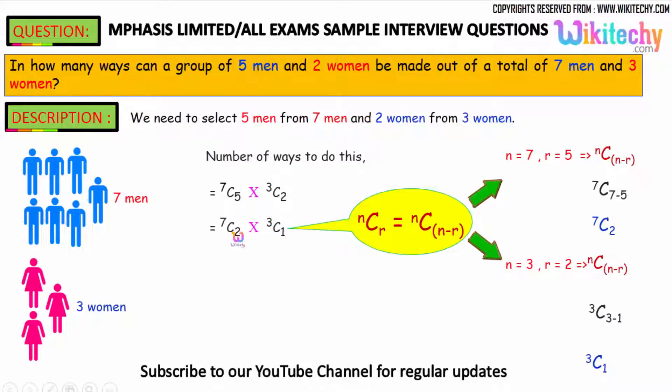So we got 7C2 and 3C1. Here is the one 7C, 7 minus 5 that's 7C2, 3C, 3 minus 2, so you got 3C1.